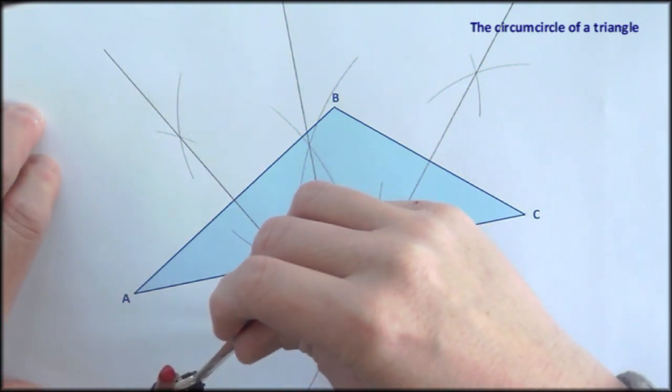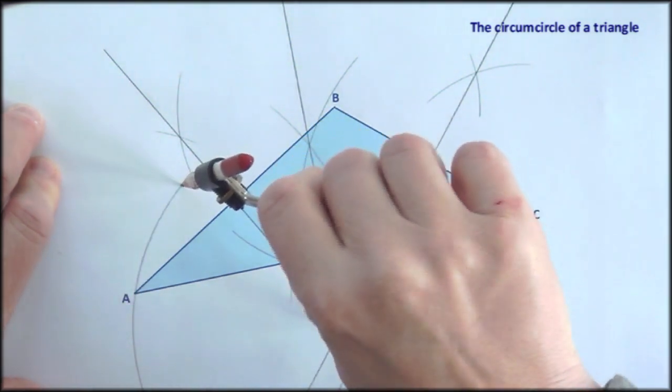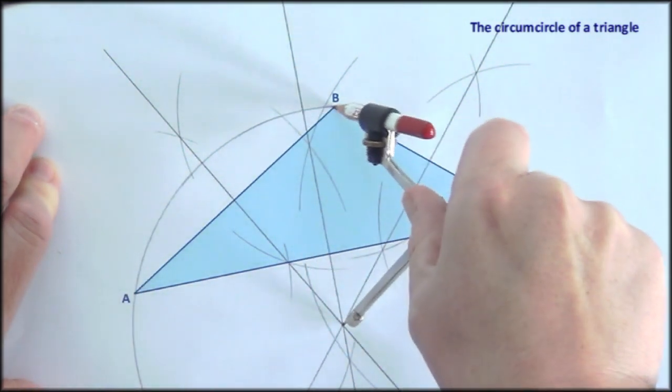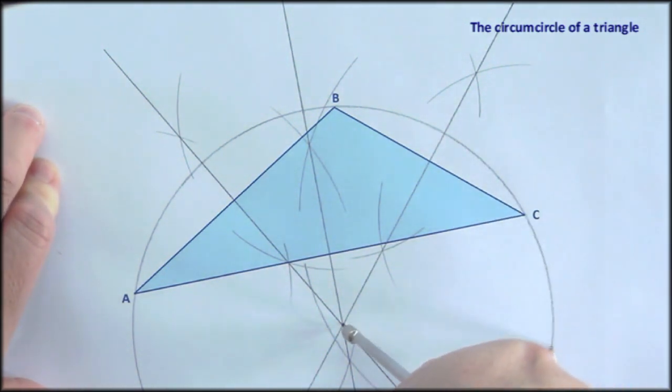And then a quick silent prayer. And it ought to go through all three if I've done a good job. Not bad. Can't quite fit the entire circle on the paper, but you get the idea. So that's the circumcircle that goes through all three vertices.